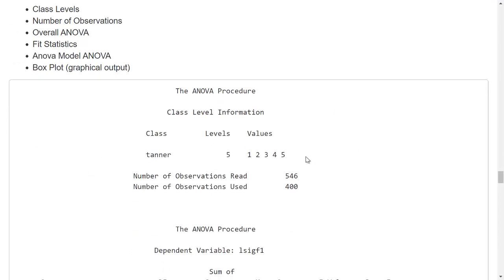So the class levels are here, and in this situation, it tells me there were five groups, and the values of the grouping variable was 1, 2, 3, 4, 5.